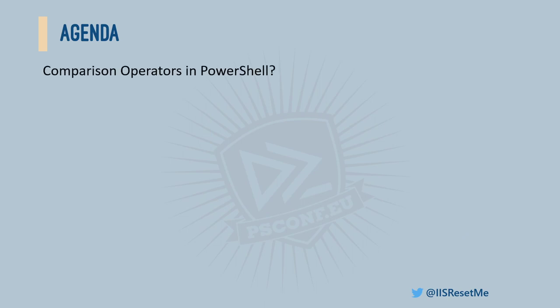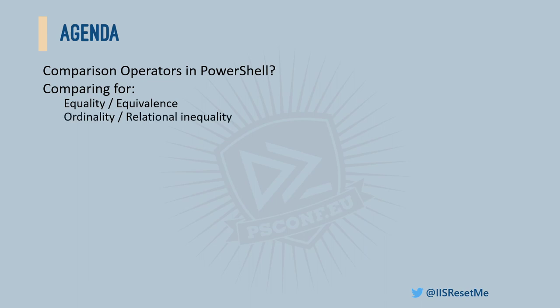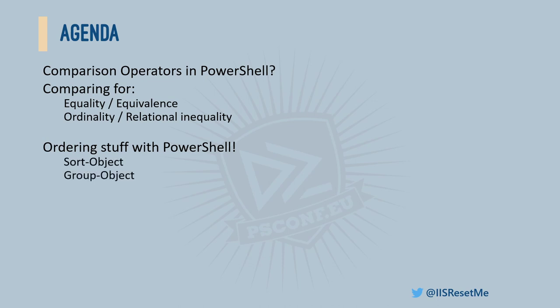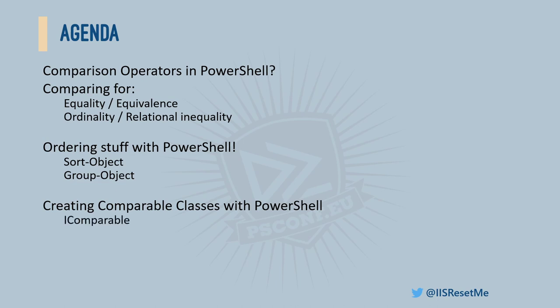On the agenda for this talk, we're going to review the existing built-in comparison operators in PowerShell — the primitives available for making comparisons. We'll briefly cover the difference between comparing for equality or equivalence versus comparing for ordinality or relational inequality. We'll look at how to order and sort things with Sort-Object and Group-Object, and then dig into how we can create comparable classes, including implementations of the iComparable interface and a brief look at IComparer and IEqualityComparer.